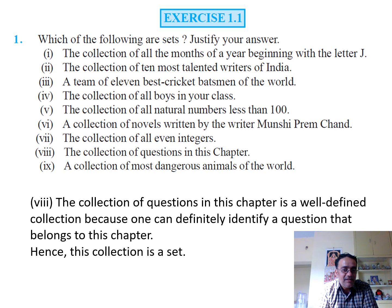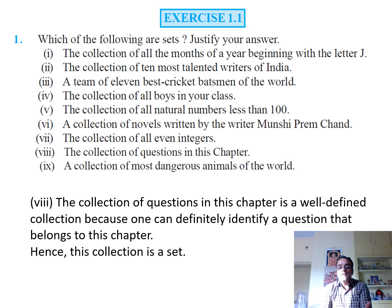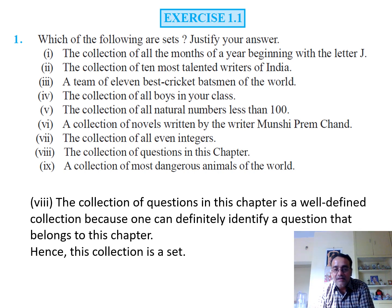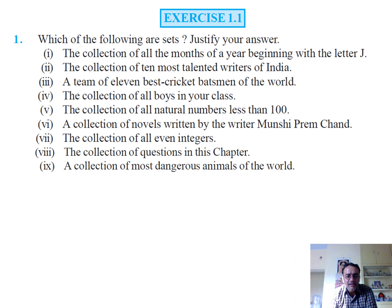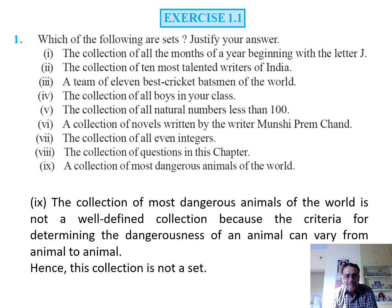The collection of all questions in this chapter is also a set. However, the collection of the most dangerous animals of the world is not a set, because the criteria for 'dangerous' varies and is not well-defined. So these are the 9 bits of question number 1.